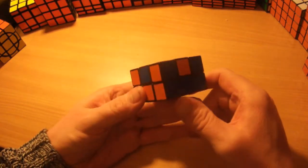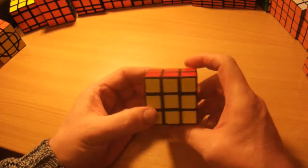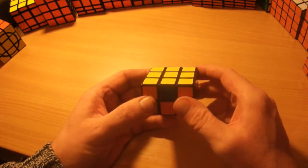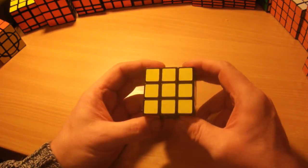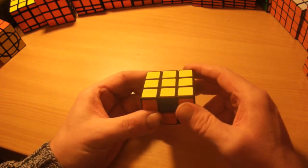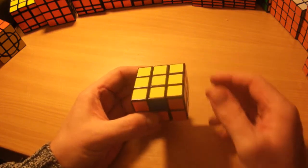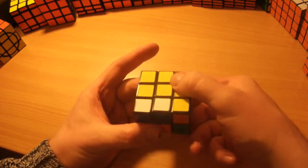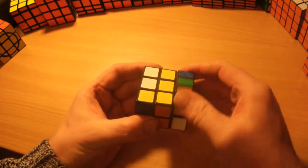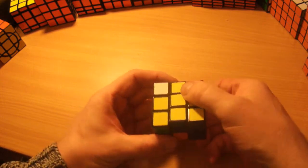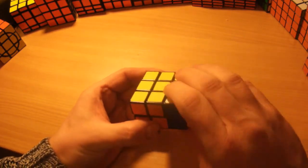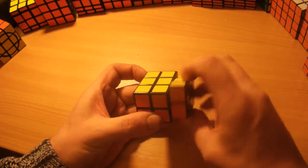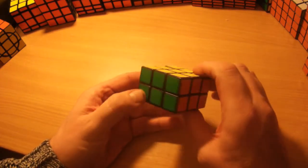Now this is probably the longest algorithm you're going to need to try and remember for solving this puzzle, the one to swap two adjacent edges. So I'll go over it a few times, and I'll give you a tip to try and help remember the algorithm. So I'll go over the algorithm first, it's R U, R U, R U2 R U2 R U, R U', R. And that's it, that's the puzzle solved.